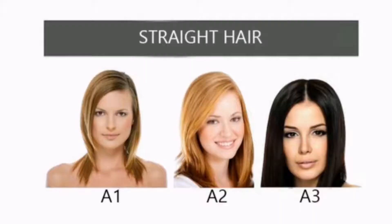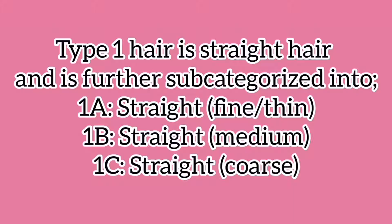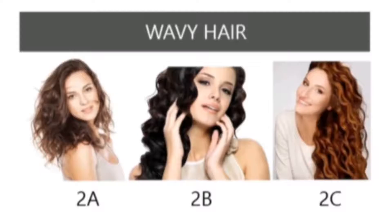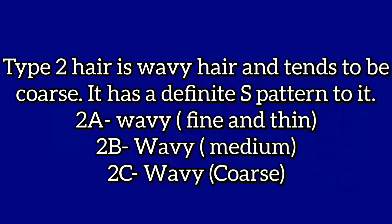Type 1 hair is straight hair, subcategorized into Type 1a, 1b, and 1c. Type 2 hair is wavy hair — it tends to be very coarse, has a definite S-pattern, and is also subcategorized into three categories: Type 2a, 2b, and 2c.